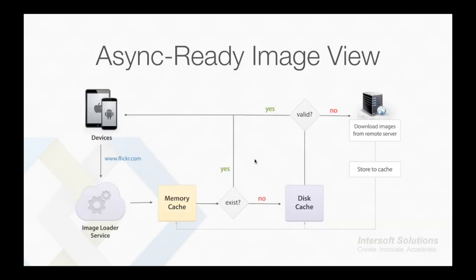After loading an image from a remote resource, the image needs to be displayed within a smart image view container, preferably with async support. In addition to the async image loader service, Crosslight 2 also provides a ready-to-use async image view. When the image view invokes the image loader service, it first tries to load the image from memory cache. If it exists, it returns the image to the device. If not, it checks the disk cache and validates the image. If valid, it is retrieved back. If not, it downloads the image from the remote server and stores it to the cache. This ensures the image view implementation in Crosslight is built smart and efficient enough to provide a great user experience.